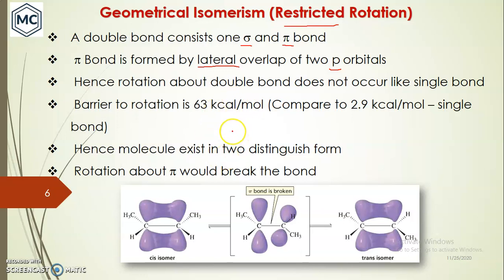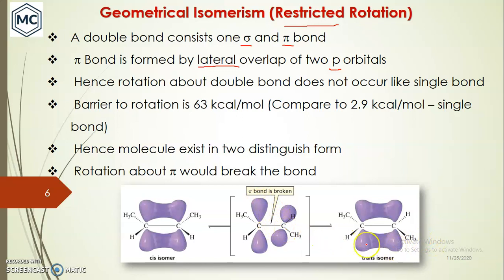Hence the molecule usually exists in two distinct forms in a pi-bonded system, whereas in a single-bonded system conformational isomers are not geometrical isomers. Geometrical isomers are very distinct from each other. You can see the cis isomer is different from the trans isomer. To convert cis to trans, rotation is necessary and the pi bond must break; otherwise you cannot get the trans isomer.